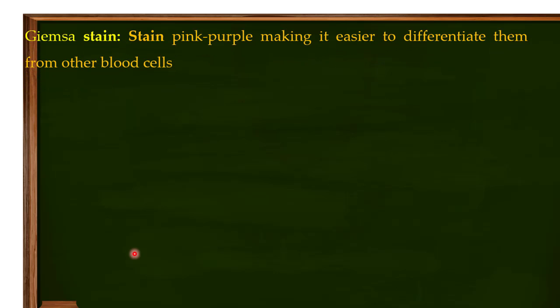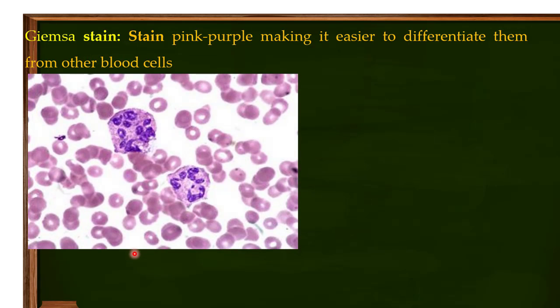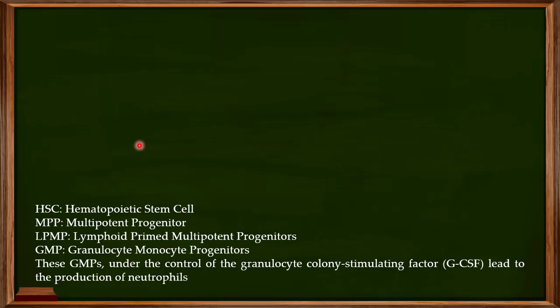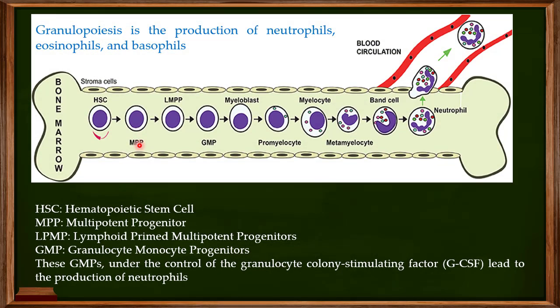I've told you about the Giemsa stain, which is used to stain neutrophils for their differentiation from other blood cells. They actually appear pink-purple when stained. I also told you about granulopoiesis, which is the production of neutrophils, eosinophils, and basophils, and gave a detailed discussion on how granulopoiesis works.